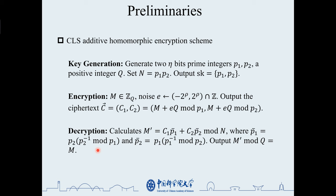The following is a brief description of the CLS scheme. The key generation phase is to generate two prime numbers p1 and p2 as the private key, and generate parameters q and n where n equals p1 multiplied by p2.